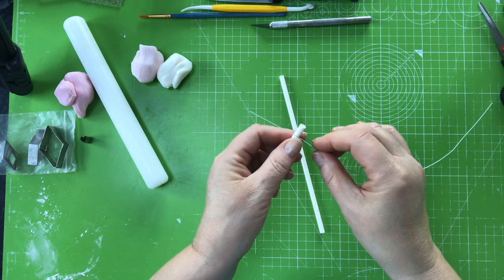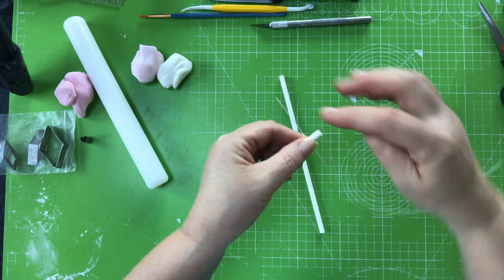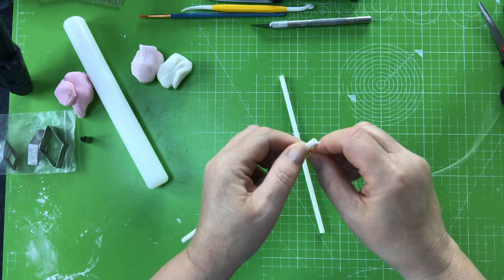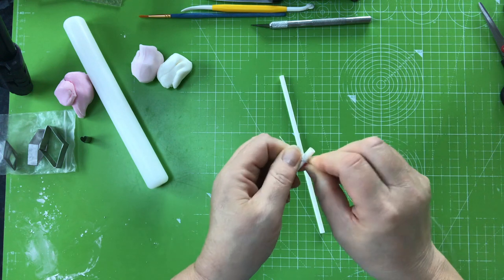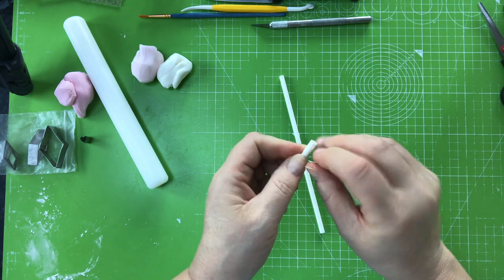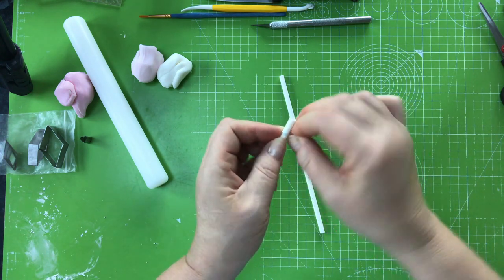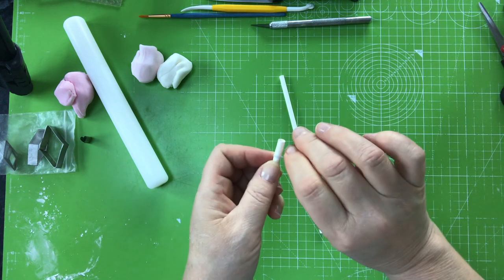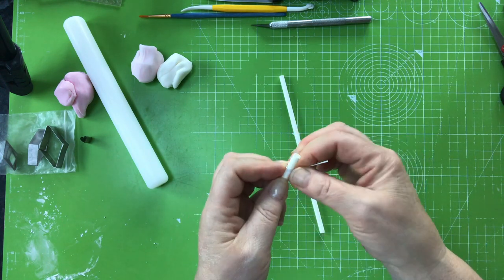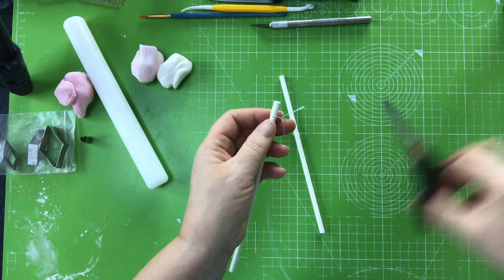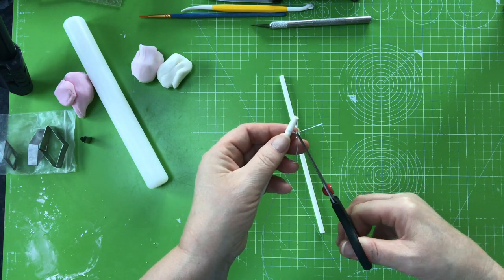Then attach at the top. I'll just take it around like that, take it around a couple of times so that it's nice and secure. All you do is just twist it around like so and then trim the end with a pair of scissors.